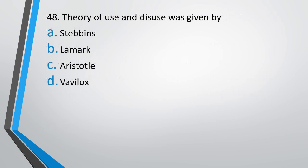Question number 48. The theory of use and disuse was given by: Stebbins, Lamarck, Aristotle, or Vavilov. The theory of use and disuse of organs was given by — the correct answer is option B, Lamarck.